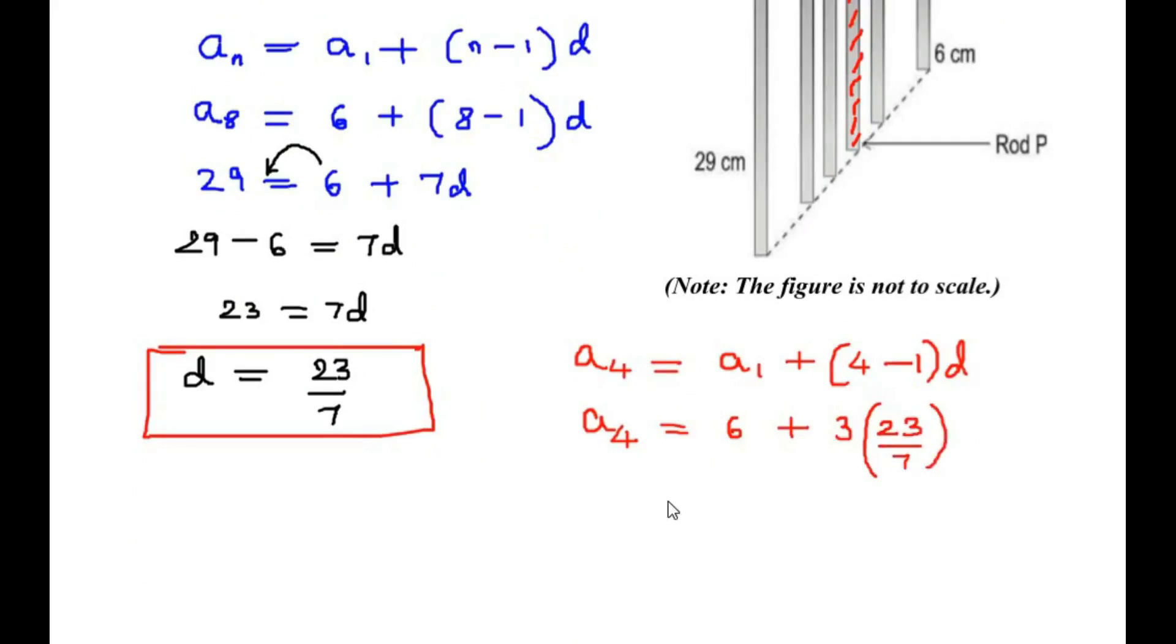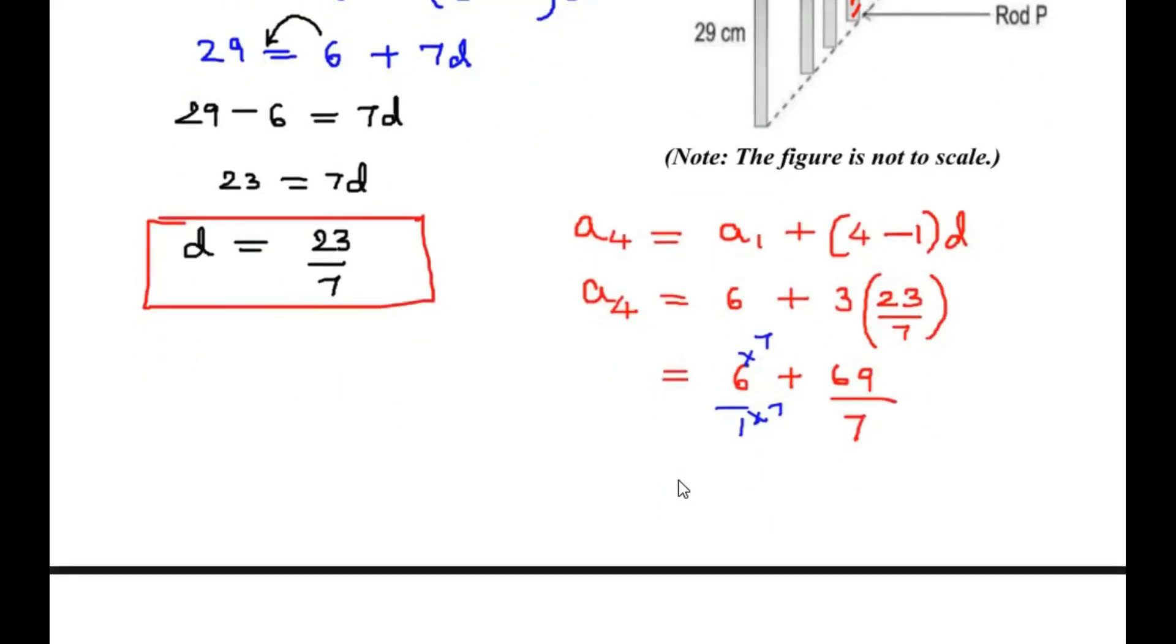Now let us simplify this, this is 6 plus, 3 times 23 gives you 69 over 7, and taking the LCM, this is divided by 1 times 7 times 7. We get 6 times 7 is 42 over 7 plus 69 over 7.